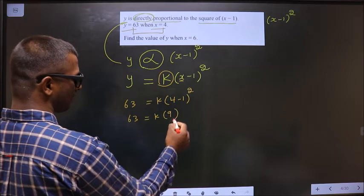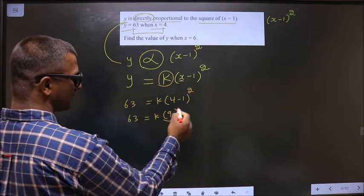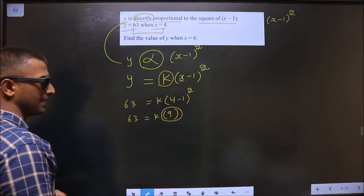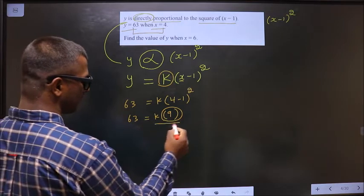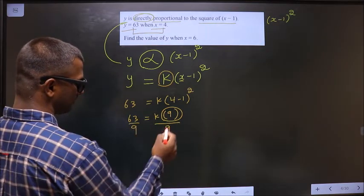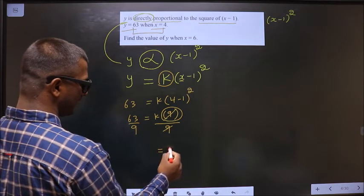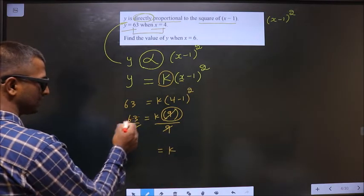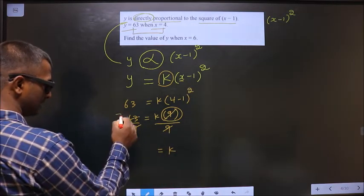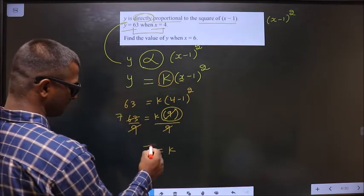3 squared is 9. Now to get k, I should remove this 9. To remove the 9, divide by 9 on both sides. This cancels out, I get k. 63 divided by 9 is 7.